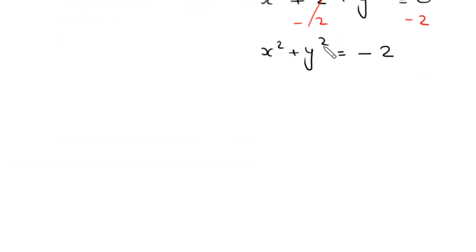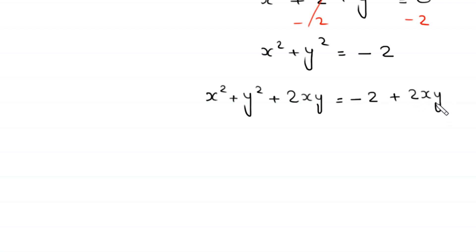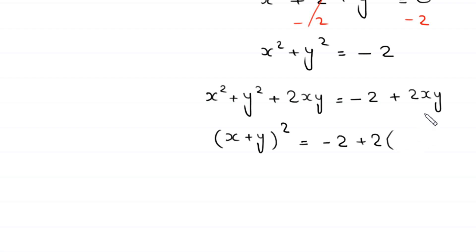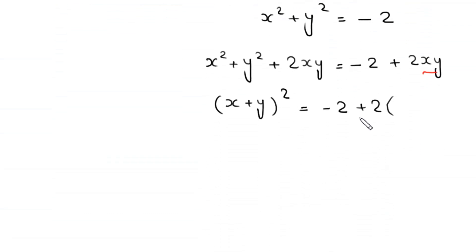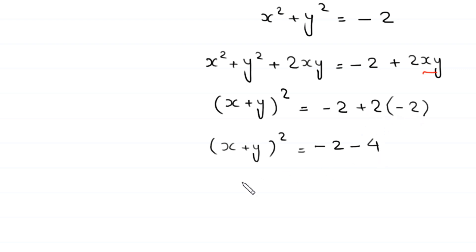To complete the square, we add 2xy to both sides: x² + y² + 2xy = -2 + 2xy. The left side becomes (x + y)². Substituting xy = -2 on the right: (x + y)² = -2 + 2(-2) = -2 - 4 = -6. So (x + y)² = -6.